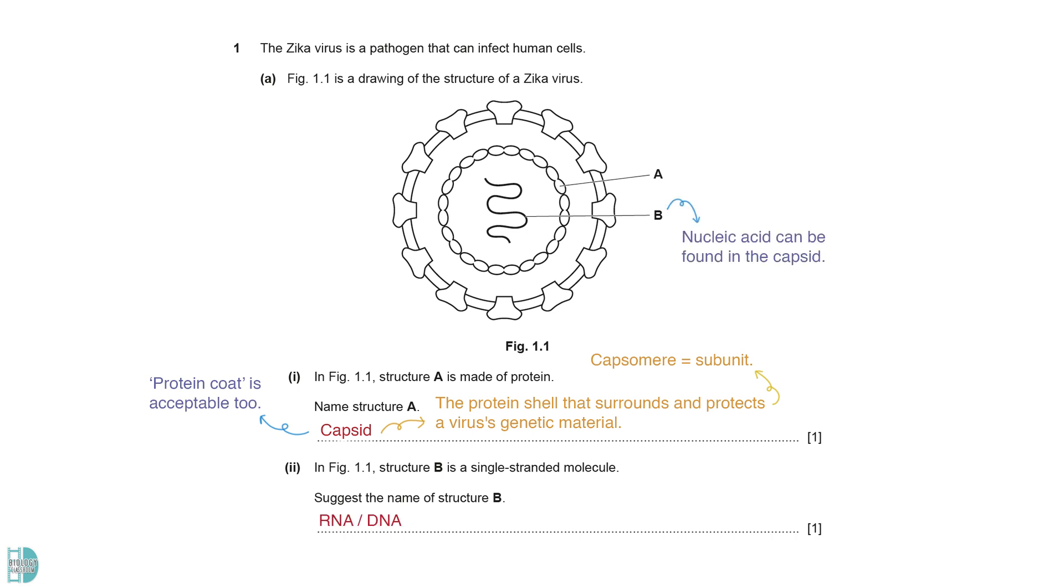Nucleic acid can be found in the capsid. It may be DNA or RNA. Even though organisms like animals and plants do not have single-stranded DNA, a virus can have it. Note that the question wants you to name the molecule. The term nucleic acid is too general and not credited.